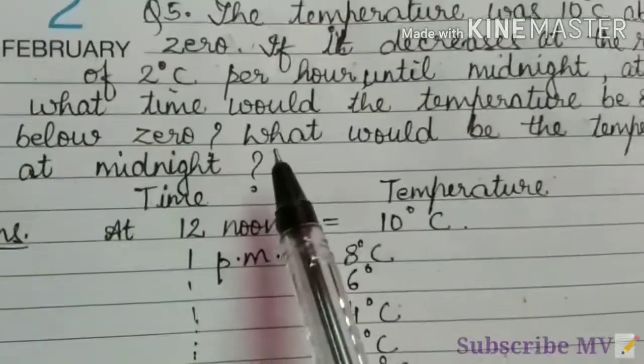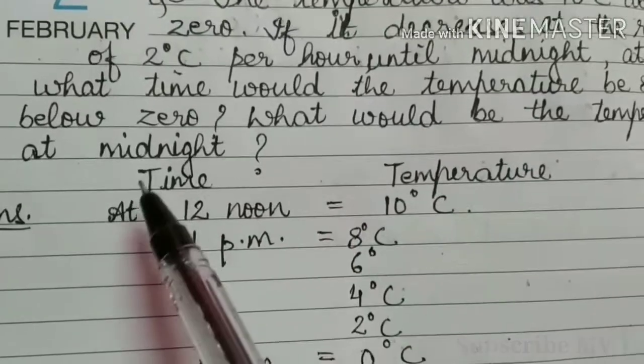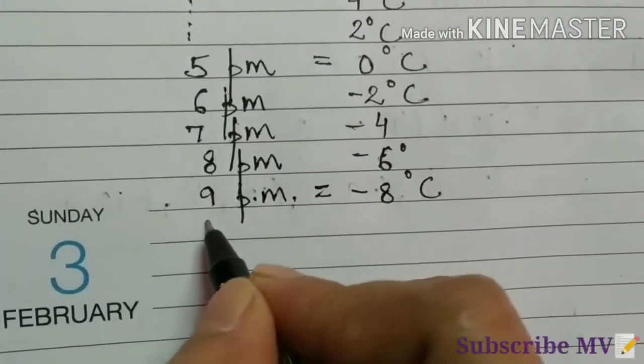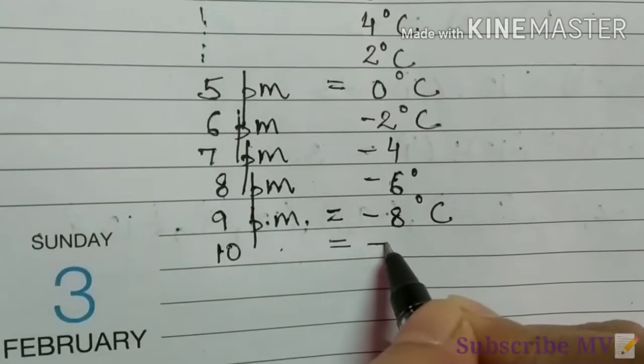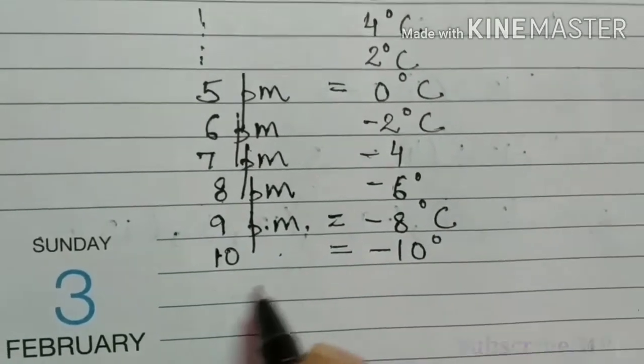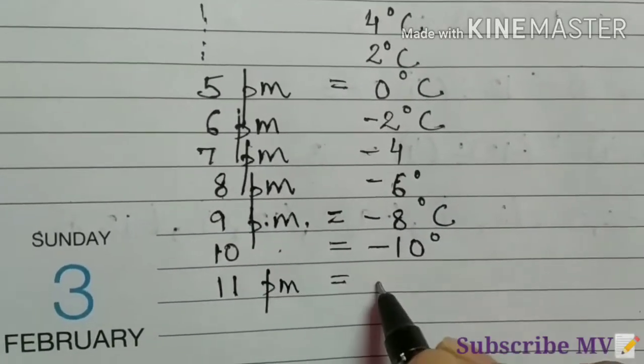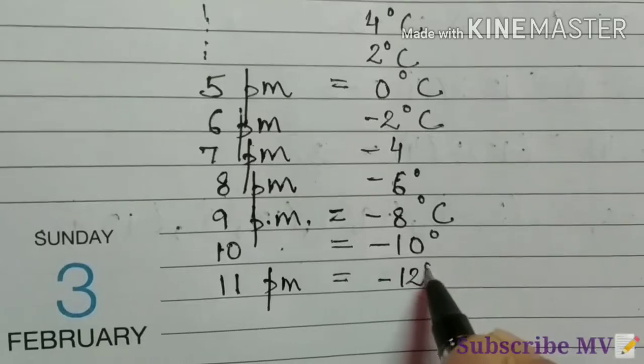And next is what would be the temperature at midnight? That is at 12. 10 p.m. it will be minus 10 degree. 11 p.m. it will be minus 12 degree Celsius.